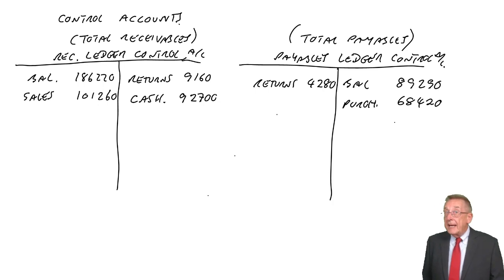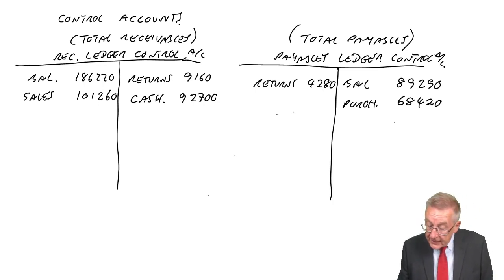Cash paid to suppliers. Again, I've no choice here but to assume that the purchases were all on credit. So credit cash, debit payables, the cash paid of 71,840.